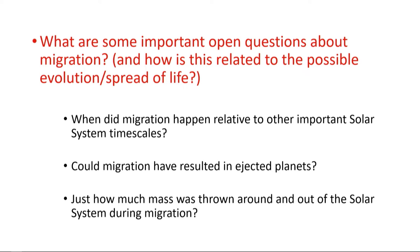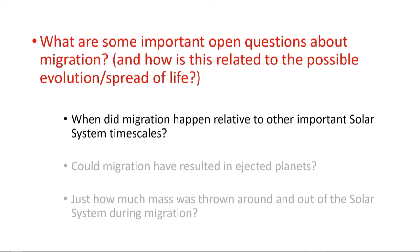What are some of the most interesting open questions about this process? We're quite sure it happened, but there are a lot of details still to be hammered out, including when did it happen, how long did it happen, could we have ejected entire planets during this process, and just how much mass did we throw around throughout our planetary system when this happened?